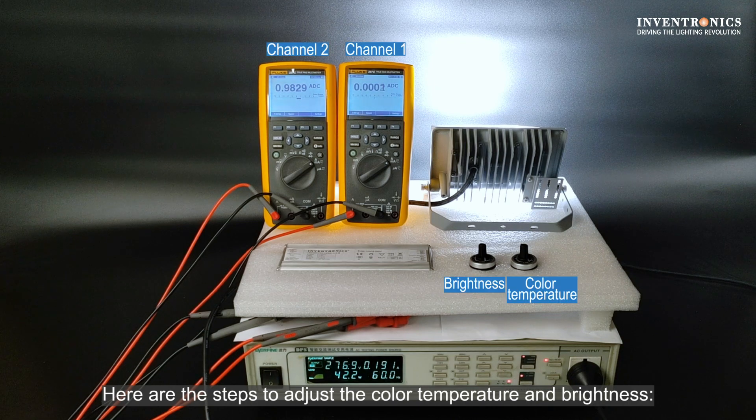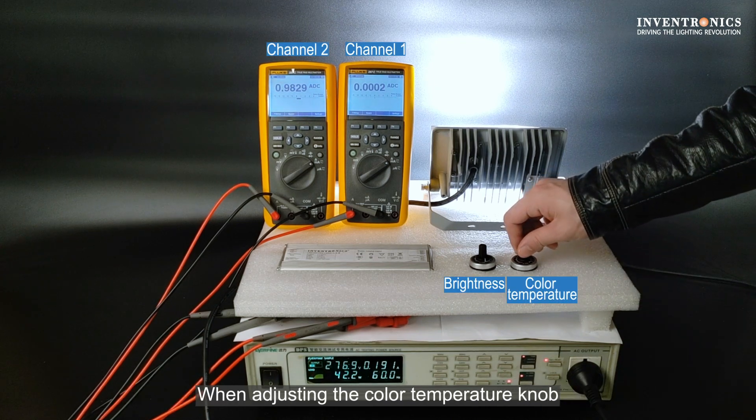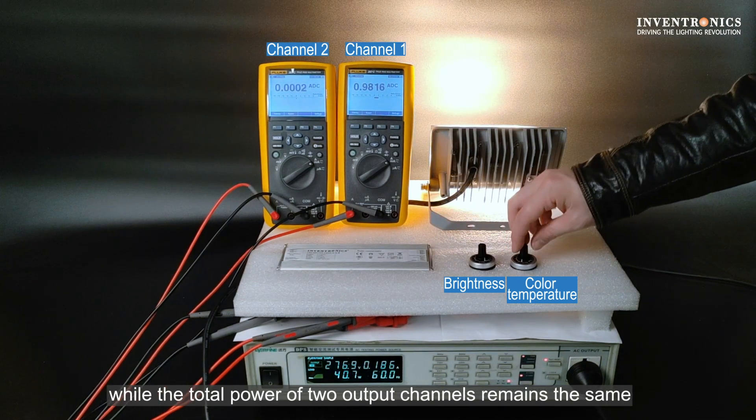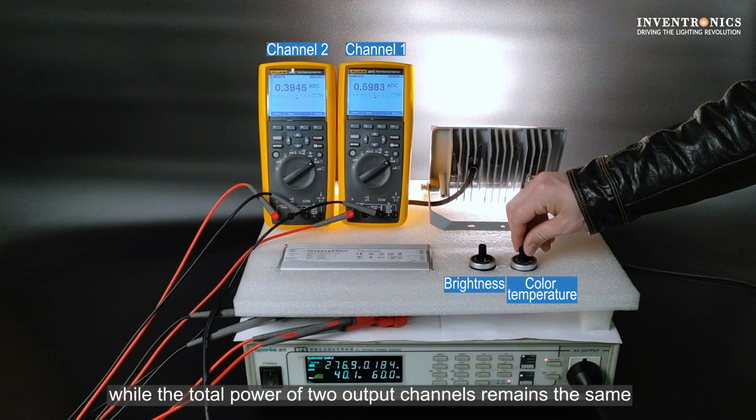Here are the steps to adjust color temperature and brightness. When adjusting the color temperature knob, the color temperature of the luminaire changes continuously while the total power of the two output channels remains the same.